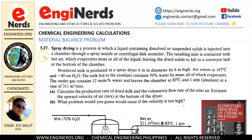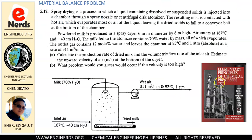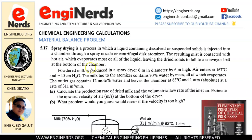Let us read our problem. This is from Problem 5.17 from Elementary Principles of Chemical Processes by Richard Felder. Spray drying is a process in which a liquid containing dissolved or suspended solids is injected into a chamber through a spray nozzle or centrifugal disc atomizer. The resulting mist is contacted with hot air, which evaporates most or all of the liquid, leaving the dried solids to fall to a conveyor belt at the bottom of the chamber.